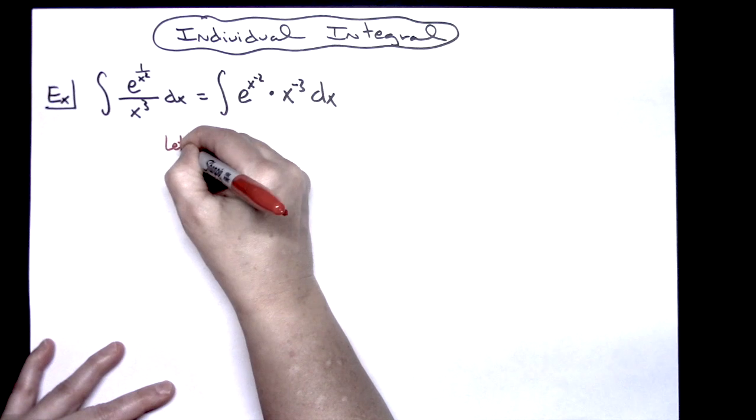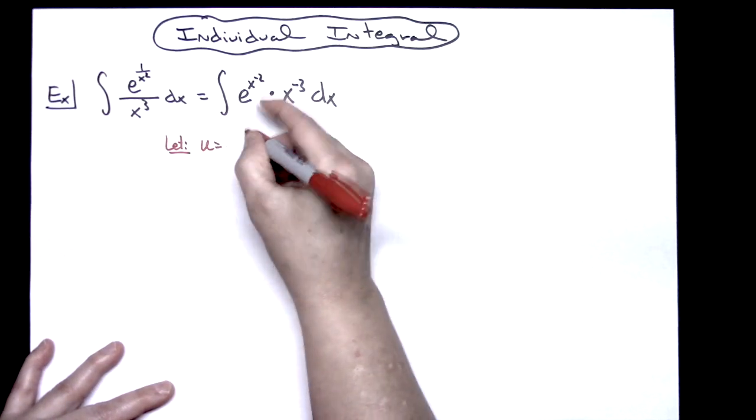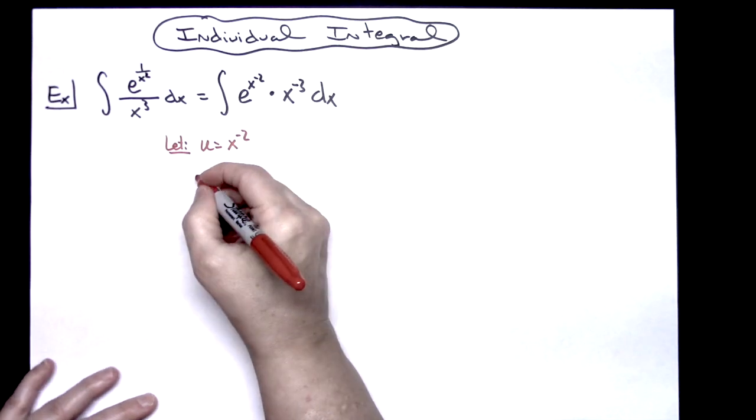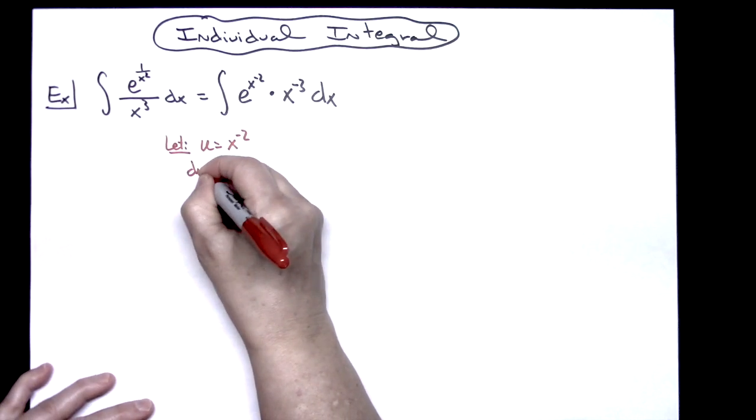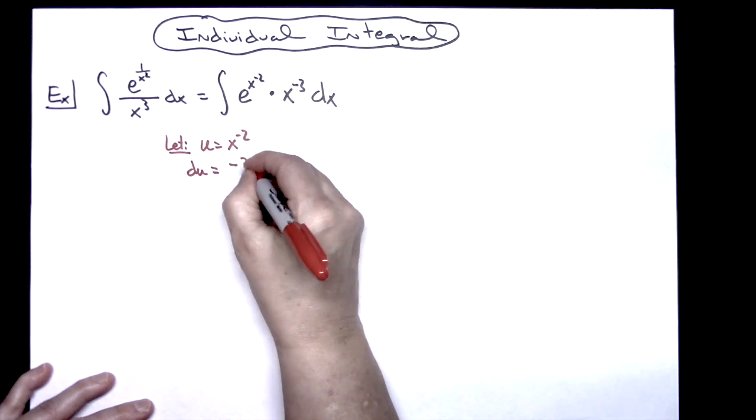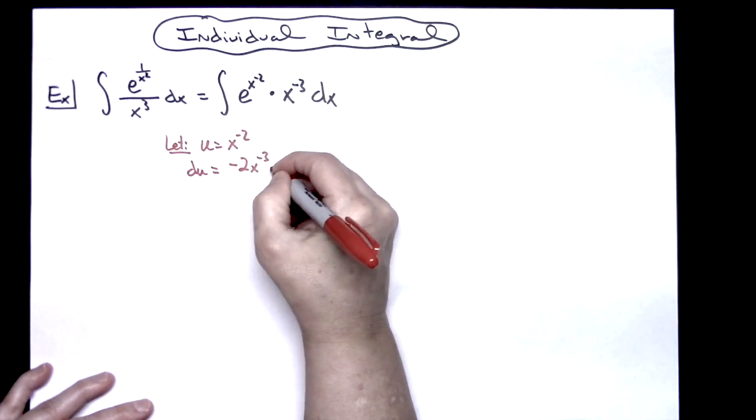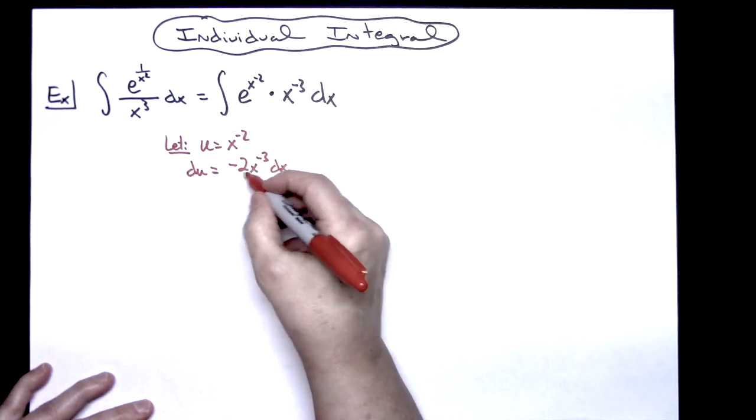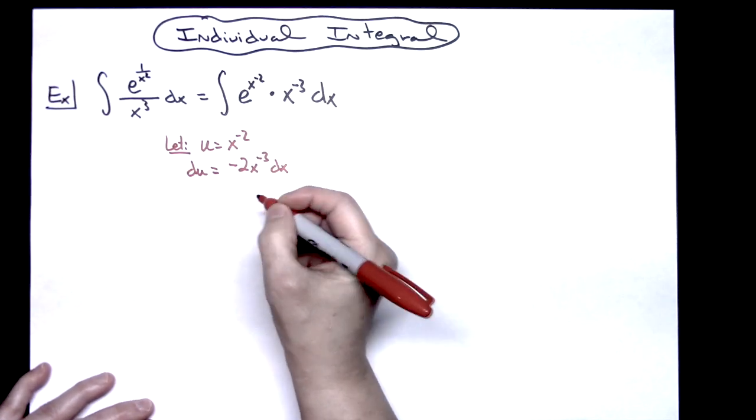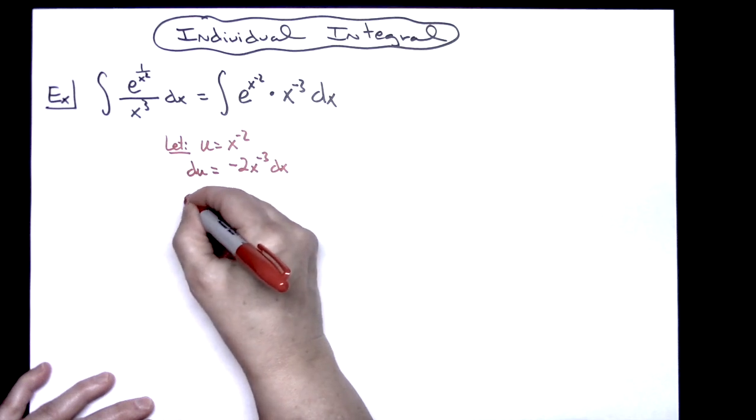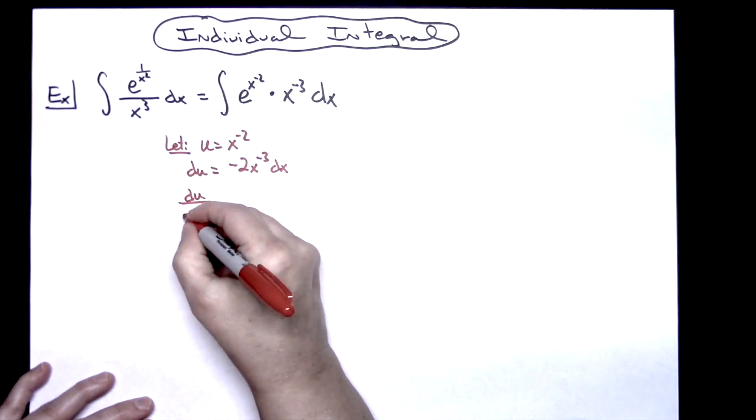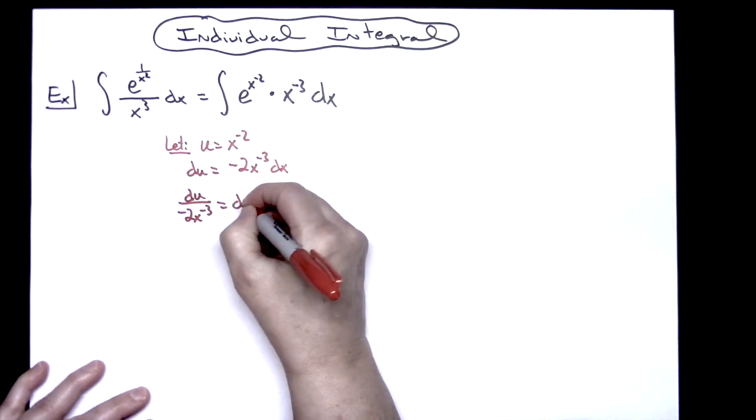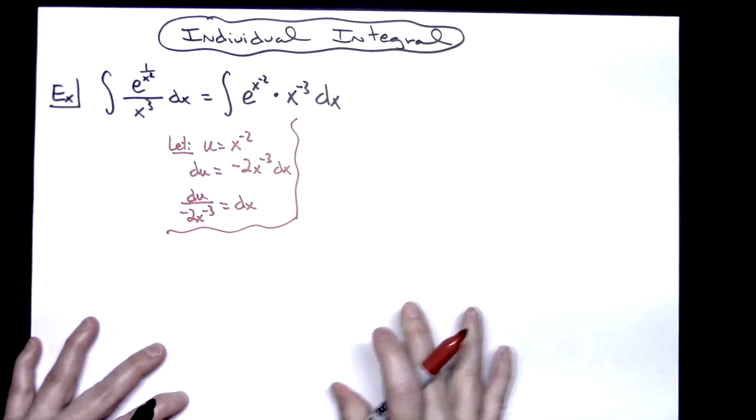So I'm going to start by letting my u be this x to the negative two. We're going to take a derivative of both sides here, so we'll have a du is equal to negative two x to the negative third dx. I'll solve all the way down for dx, so I'm going to divide both sides by that negative two x to the negative three. So I'll have a du over a negative two x to the negative third, and that's going to be equal to my dx.